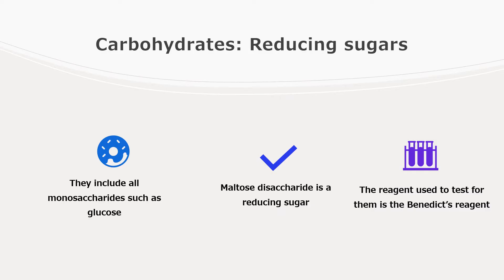The reducing sugars include all monosaccharides such as glucose, galactose, and fructose. Maltose, even though it's a disaccharide, is actually a reducing sugar. And what you use to test for reducing sugars is called the Benedict's reagent. All of these reagents will be given to you when you get into the exam.